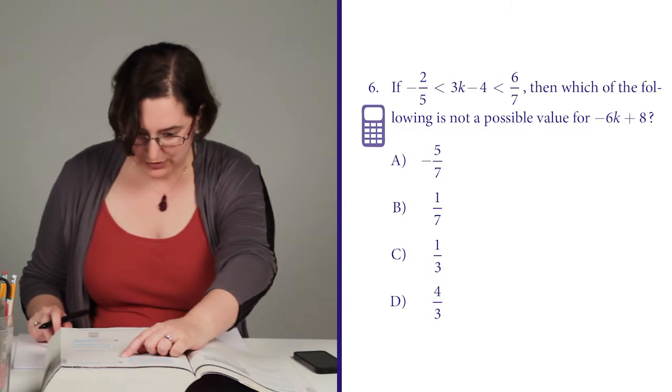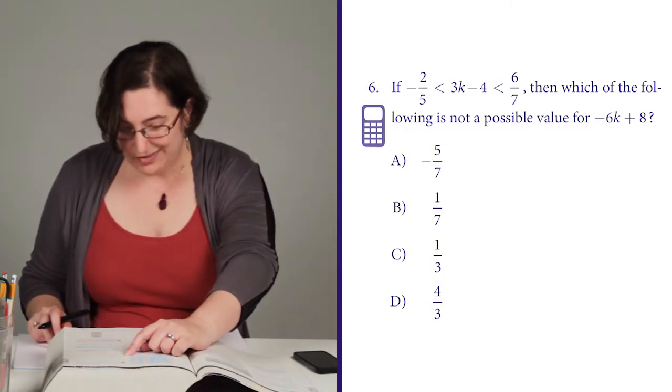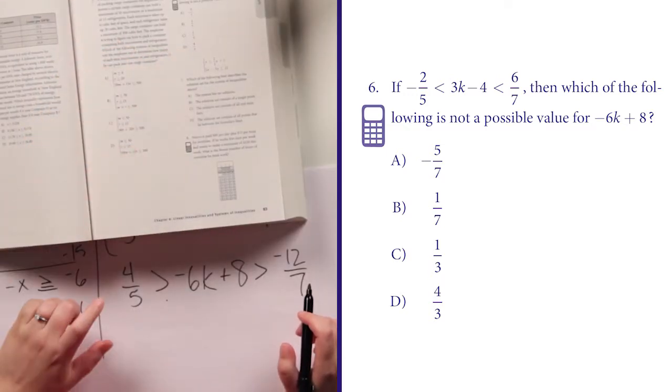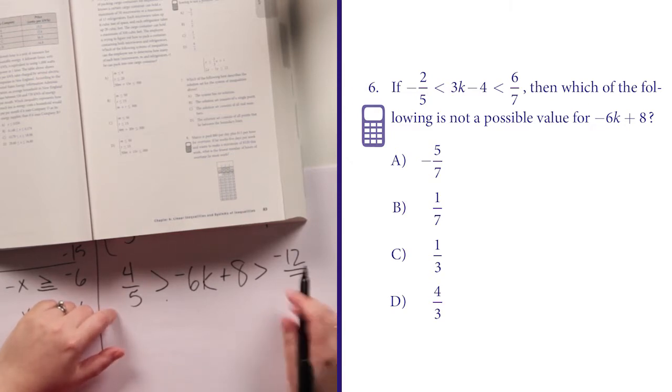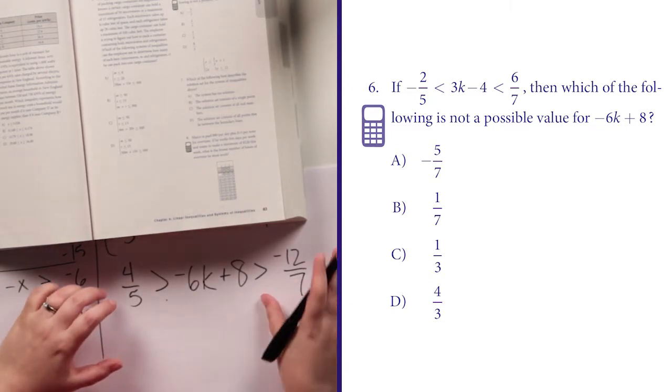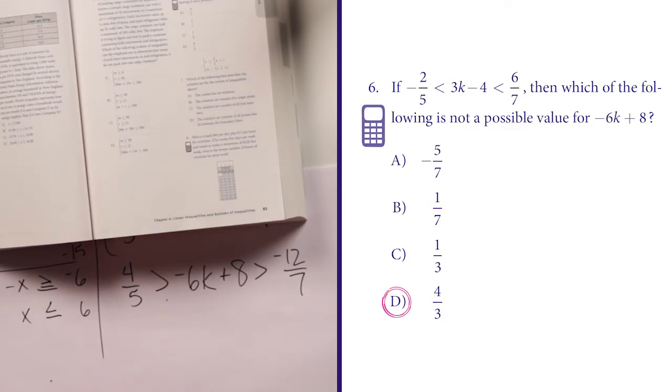1 third, similar. 4 thirds, on the other hand, that's bigger than 1. So it's going to be too big to get in under 4 fifths, and it's definitely not going to be inside this range. So there's my answer.